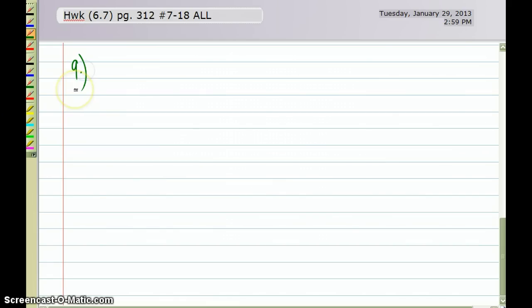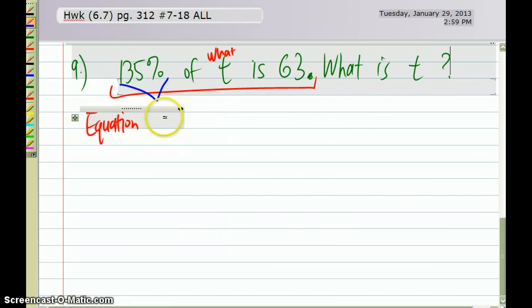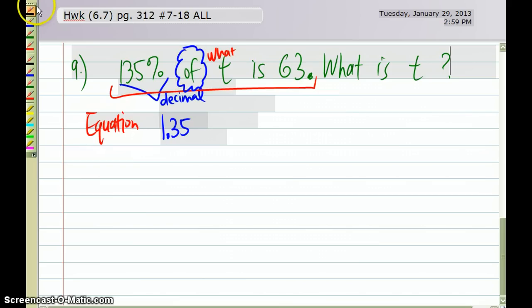Okay, number 9, 135% of t is 63, and you're looking for what is t. Now, we can just take this sentence right here and create our equation. I don't really need the 'what is t' because clearly I'm looking for the t. So I start with 135%. Because it is a percentage, I'm going to change it to a decimal, which is going to become 1.35. Then I have the word 'of,' according to my math code 'of' represents multiplication. So I'm multiplying 1.35 of t, so times the t. And then 'is' is my equal sign, so I write equal sign, and then I bring my 63 after that equal sign.